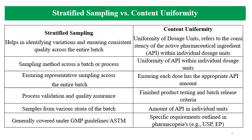Now, the key differences between Stratified Sampling and Content Uniformity: Stratified Sampling helps in identifying variations and ensuring consistent quality across the entire batch, whereas Content Uniformity refers to the consistency of active pharmaceutical ingredients within individual dosage units. Stratified Sampling is applied across a batch or across a process, while Content Uniformity tests the uniformity of API within individual dosage units.